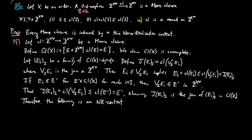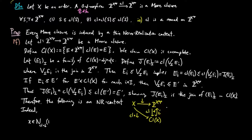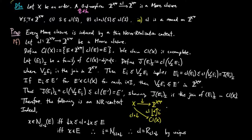Therefore, the composition Cl with the down-segment functor is a thin nerve-realization context inducing the nerve-realization adjunction: Cl left adjoint to the inclusion i. Indeed, the inclusion is the nerve, since x is in N of e if and only if the lower segment on x is less than or equal to the closure precomposed by the lower segment on x, which is less than or equal to e — by definition of the nerve and the closure. This holds if and only if x is in e. Therefore the inclusion is the nerve, and so the closure must be the realization by uniqueness of an order adjunction.